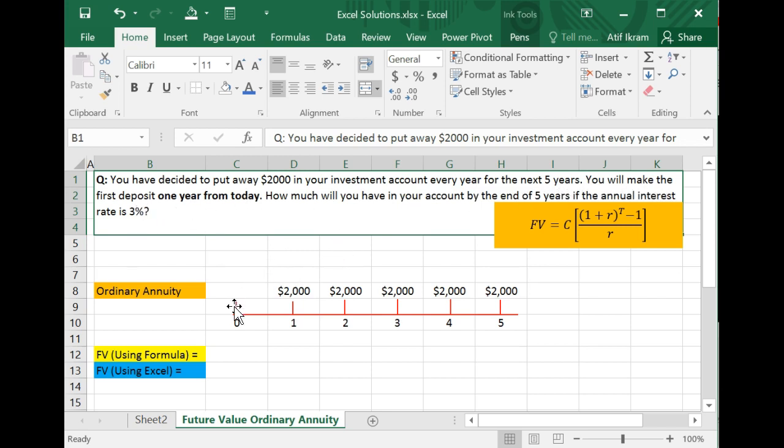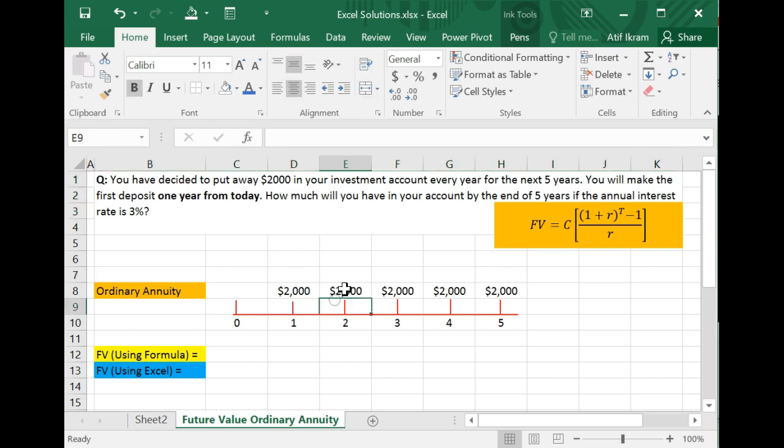If you try to depict this on a timeline, basically here you are today. Here's the end of year one where you're going to make your first deposit, then second, third, fourth, and fifth. So from a conceptual standpoint, this first $2,000 is going to grow for four years. This next $2,000 is going to grow for three years.